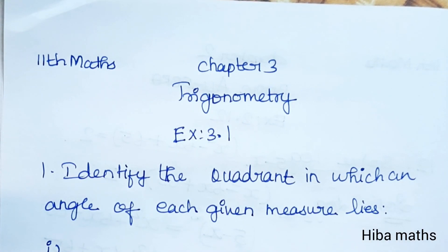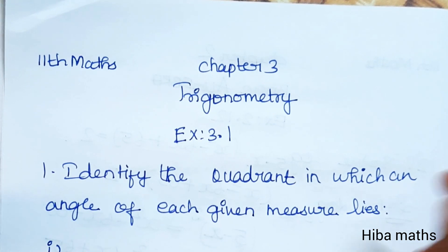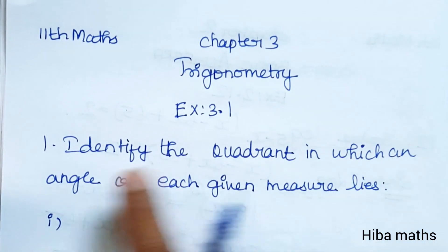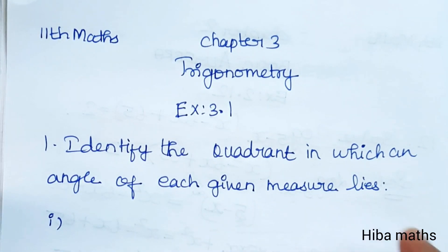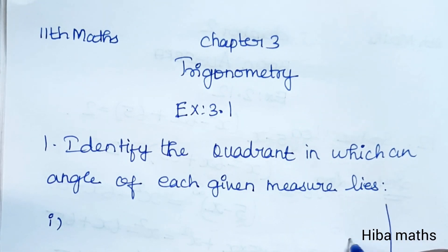Hello students, welcome to Hiba Maths, 11th standard, Chapter 3: Trigonometry, Exercise 3.1. First question: Identify the quadrant in which an angle of each given measure lies.